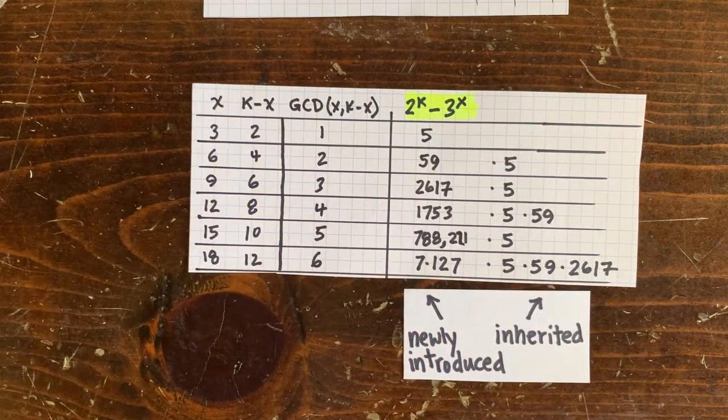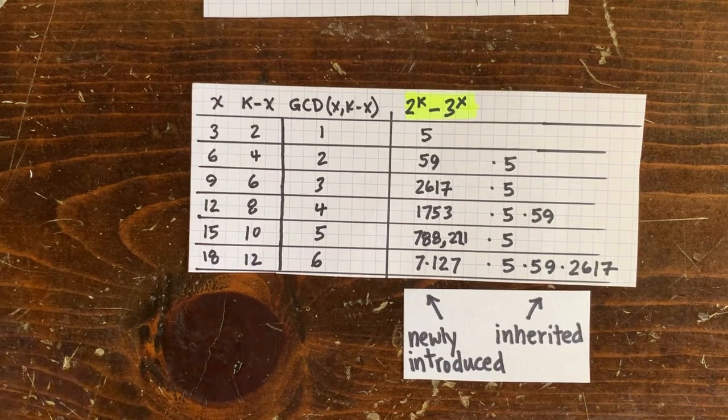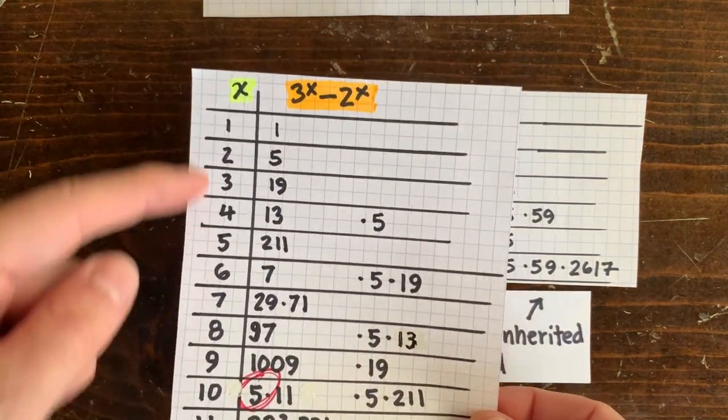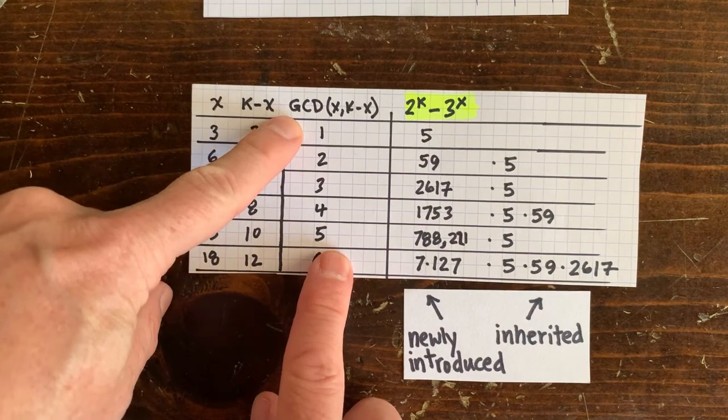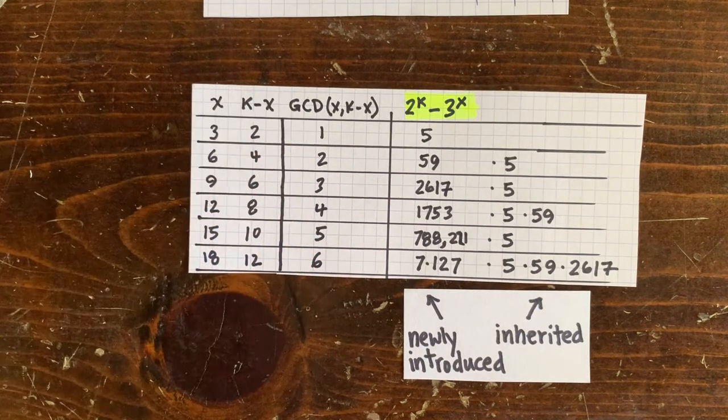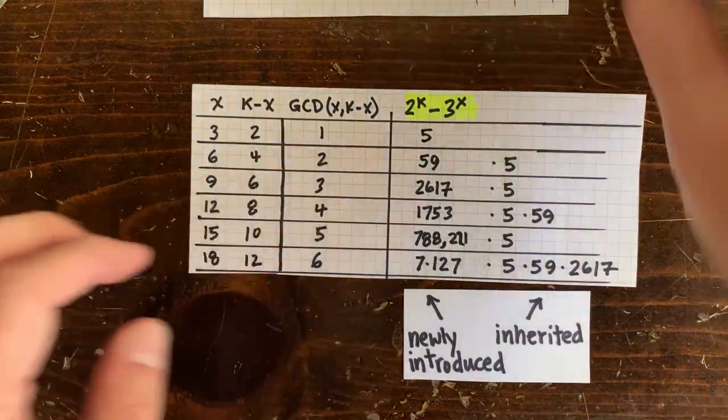Instead of inheriting from the divisors of x, like with the old chart, now we inherit using the common divisors of x and k minus x. So counting along the ray of sunshine, 1, 2, 3, 4, 5, 6...